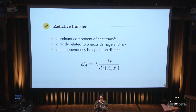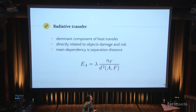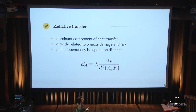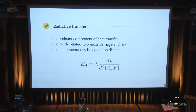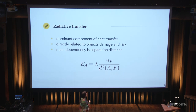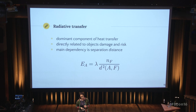Radiative transfer is fundamental because its value can be directly related to damage and risk levels of objects and people in the refinery. In the formula shown, for a given source of radiation F representing the fire, the amount of energy affecting an object A is inversely proportional to the square of the distance between the object and the flame. Moreover, it is directly related to the number of particles representing the flame inside Blender, weighted by a factor lambda, depending on the type of fuel in the simulation. Because of the significant weight of the distance, its computation is critical, and there is a critical trade-off between the precision and the speed of this computation.